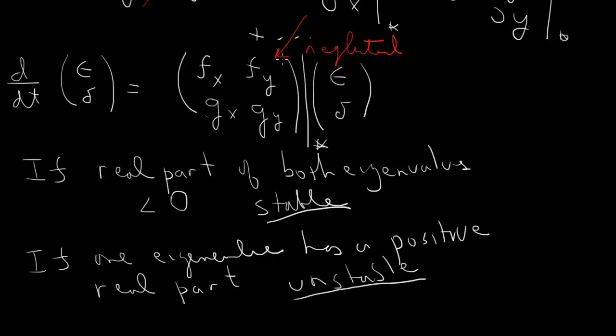So it all comes down to the real part of the eigenvalues of this matrix. This matrix here is called the Jacobian at the fixed point.